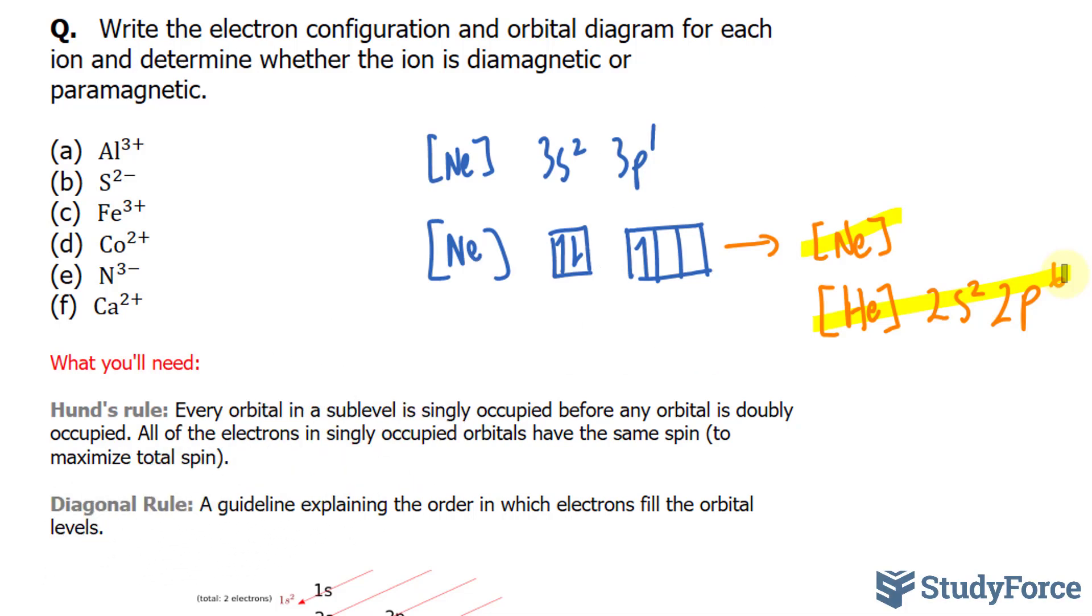Now, we also have to determine whether it's diamagnetic or paramagnetic. And because there are no unpaired electrons, it's diamagnetic. So if we were to take a look at the following, had we removed all three of these electrons, you wouldn't have anything that's unpaired. Therefore, this is diamagnetic.